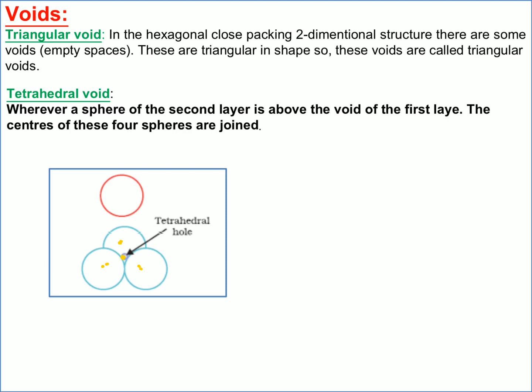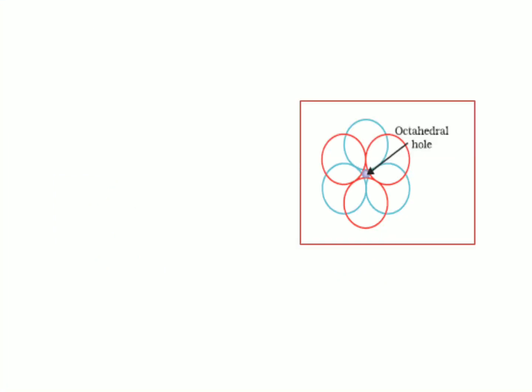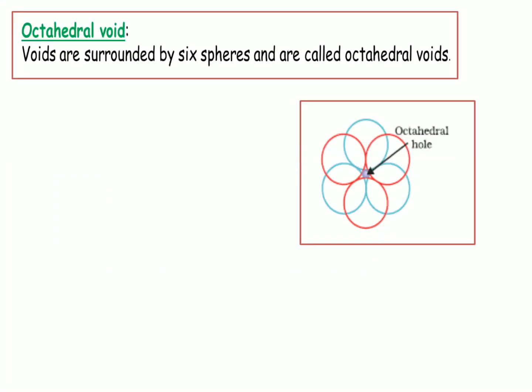Now for tetrahedral voids: suppose we have three particles and there is a hole created — if we consider only these three particles, this is a triangular void. But when a fourth particle (shown in red) is placed on top of it, the void is called a tetrahedral hole. There are now four spheres with a triangular base, and the center gives a tetrahedral structure, so this is called a tetrahedral void.